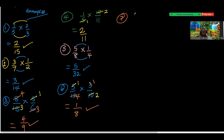Number seven: 5 over 12 times 6 over 15. What number can divide from top to bottom? 12 and 6: use 6 — 6 into 6 is 1, 6 into 12 is 2. Also 5 and 15: 5 into 5 is 1, 5 into 15 is 3. We could also have used 2 and 4, but using 6 and 12 simplifies it in one step.